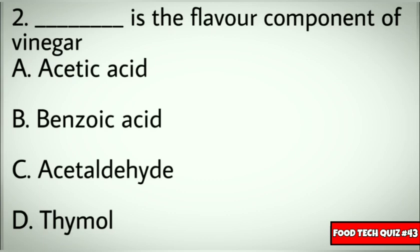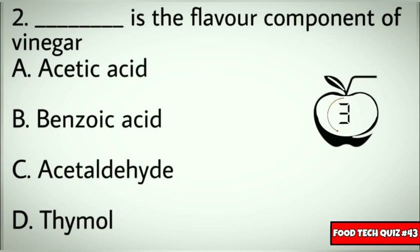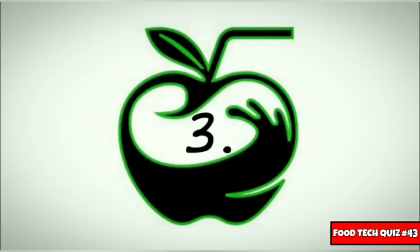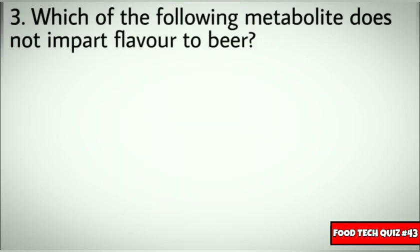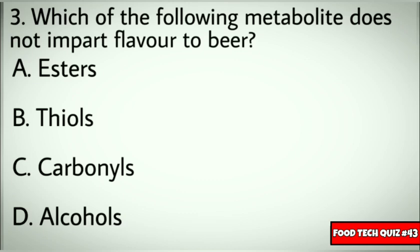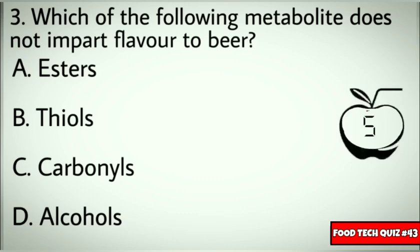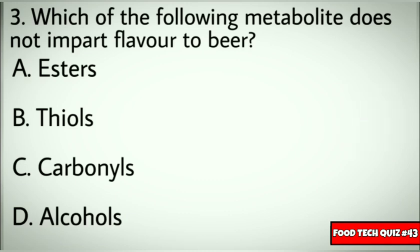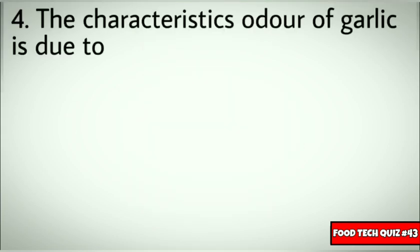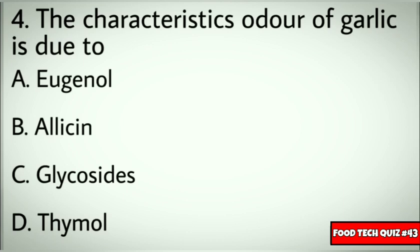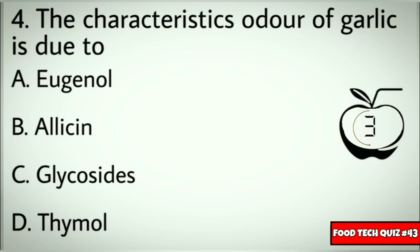Question number 3: Which of the following metabolites does not impart flavor to beer? Options: A) Esters, B) Thiols, C) Carbonates, D) Alcohols. Correct answer: B) Thiols. Question number 4: The characteristic odor of garlic is due to? Options: A) Eugenol, B) Allicin, C) Cricocytes, D) Thymol. Correct answer: B) Allicin.